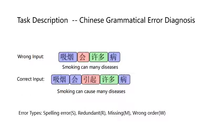First, let's have a look at the CGED Task. The input of the task is a wrong Chinese sentence. For example, smoking can many diseases, which is missing a word, while the correct output should be smoking can cause many diseases. This is an example of a missing error.